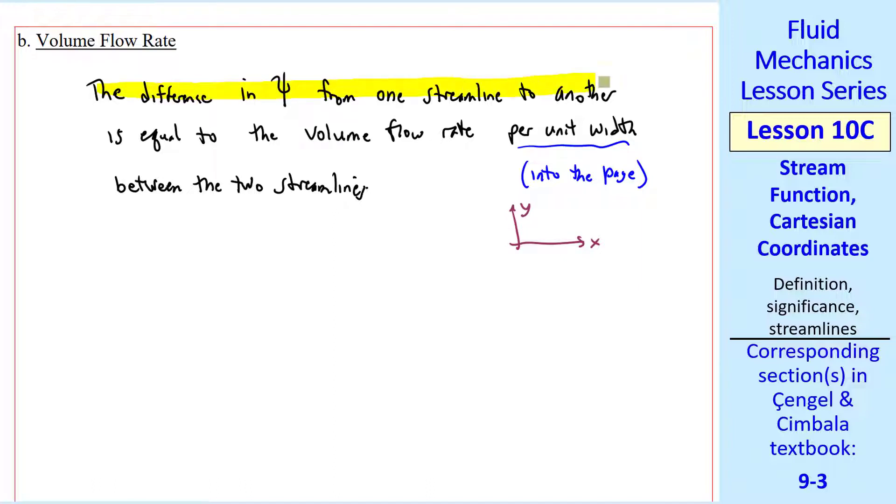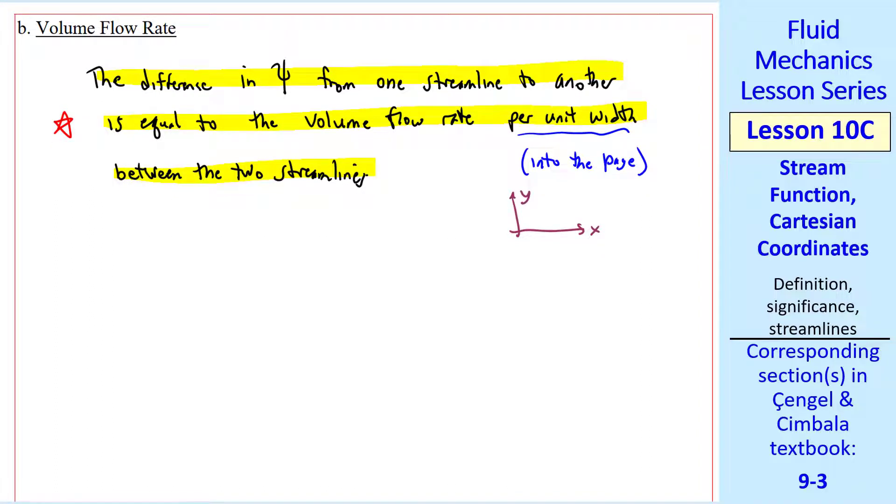So we have a volume flow rate per unit width between the two streamlines. So if we know psi, we can calculate the volume flow rate per unit width between any two streamlines, simply by taking the difference in psi. You can look at the textbook for the derivation of this, which I'm not going to do here.